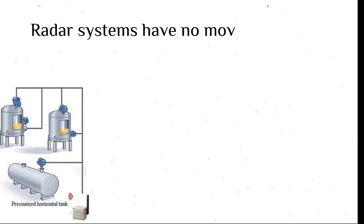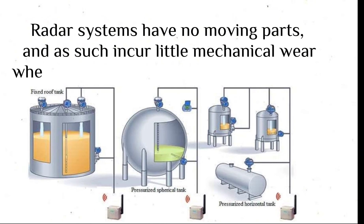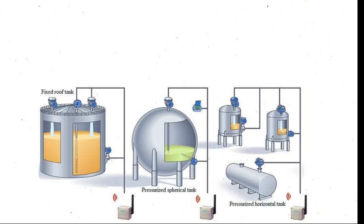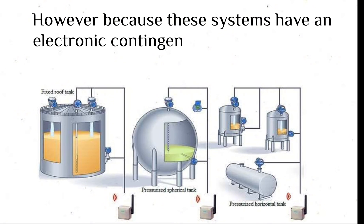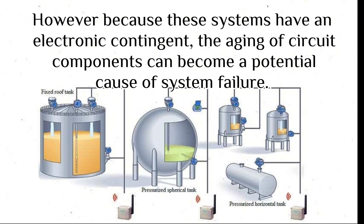Radar systems have no moving parts and as such incur little mechanical wear when compared to servo gauge technology. However, because these systems have an electronic contingent, the aging of circuit components can become a potential cause of system failure.